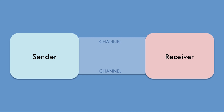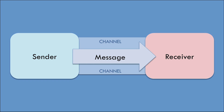It starts with a sender sending the message to a receiver through a channel of communication. This channel of communication could be anything — anything that carries the message. The message always goes from left to right, from the sender to the receiver.